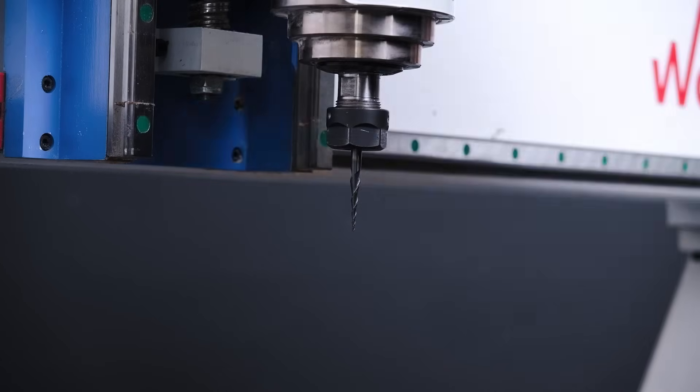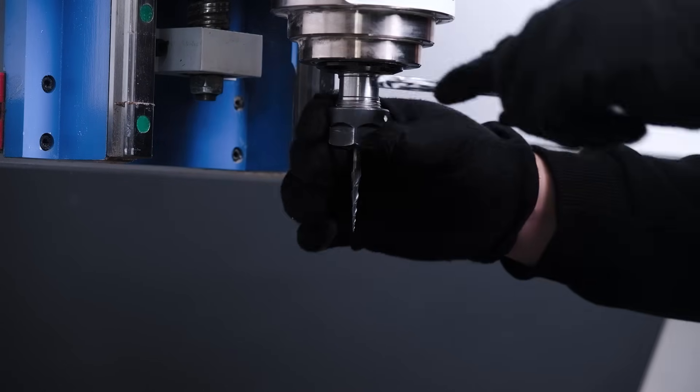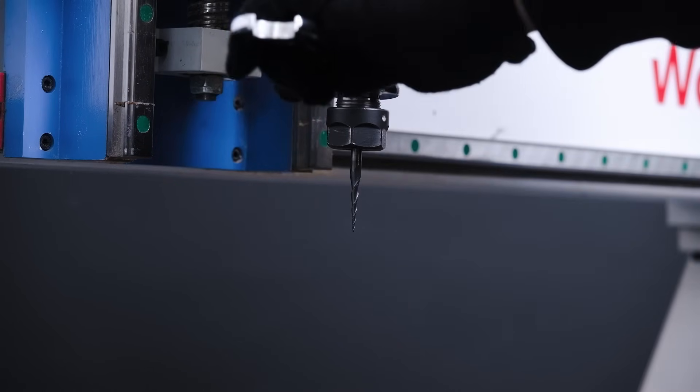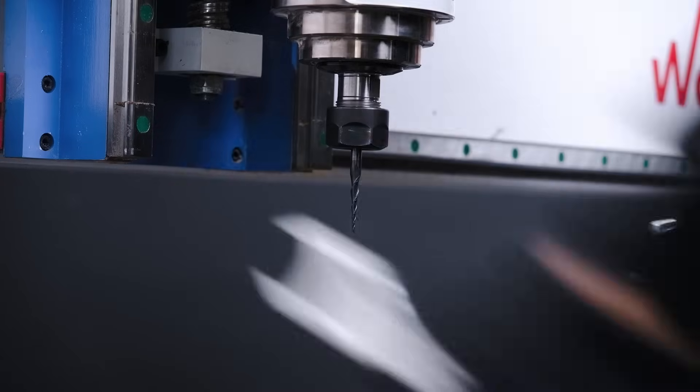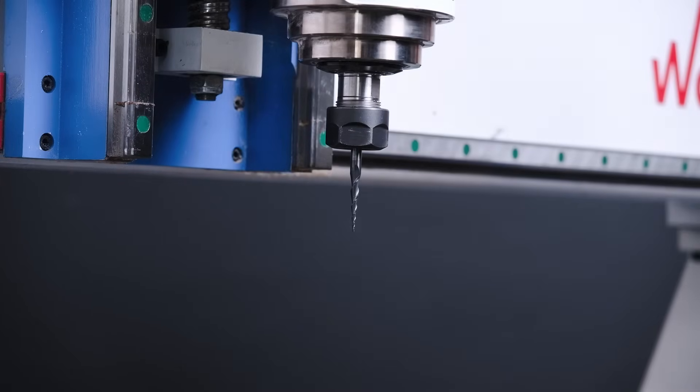The longer the tool, the deeper it needs to be inserted into the collet, exceeding the two-thirds rule. You can insert it at almost the entire length of the shank.